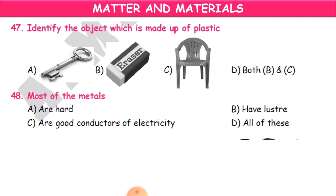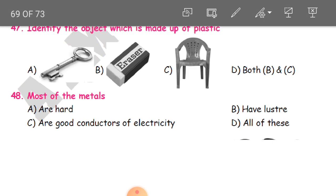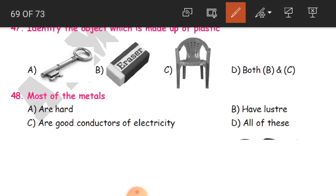Question 47: Identify the object which is made up of plastic. Options are a key, an eraser, a chair, or both B and C. The chair is made up of plastic. The key is of metal, and the eraser is of rubber. So C — the chair — is our answer.